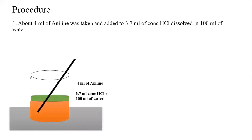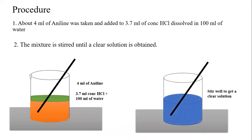What is the procedure? About 4 ml of aniline was taken and to this added 3.7 ml of concentrated HCl, which was dissolved in 100 ml of water and stirred. The mixture is stirred until we get a clear solution. You can see in the image.